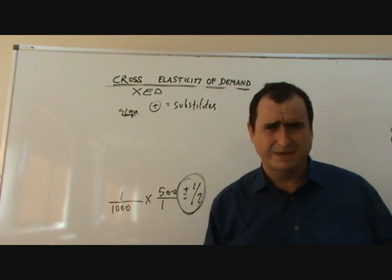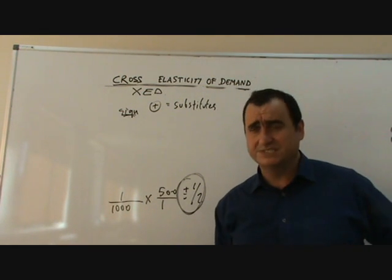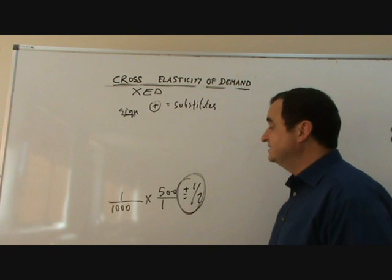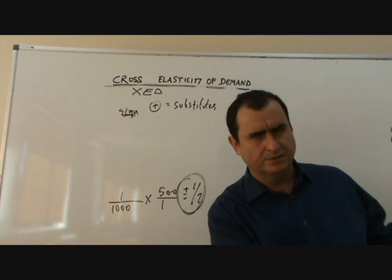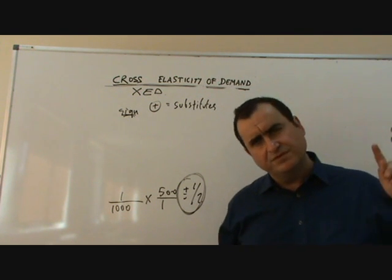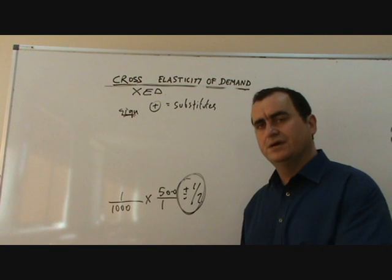Now we might have expected Coke and Pepsi to be substitutes, but we couldn't be sure of it until we analysed the data. And the fact is that when the price of Pepsi goes up, probably there's reduced quantity demand for Pepsi. We're not looking at that. But we see that the rising price of Pepsi has caused people to buy Coke.